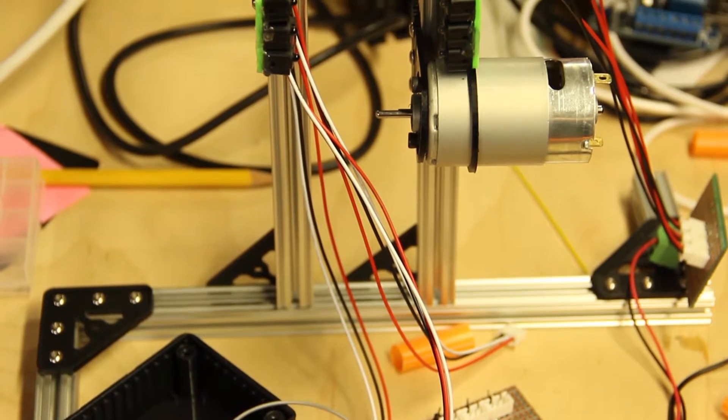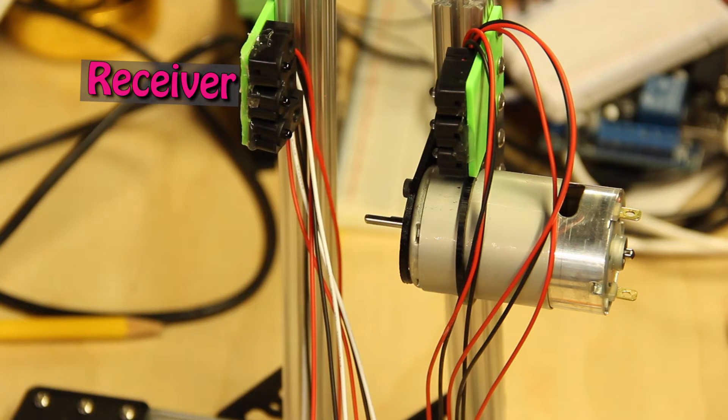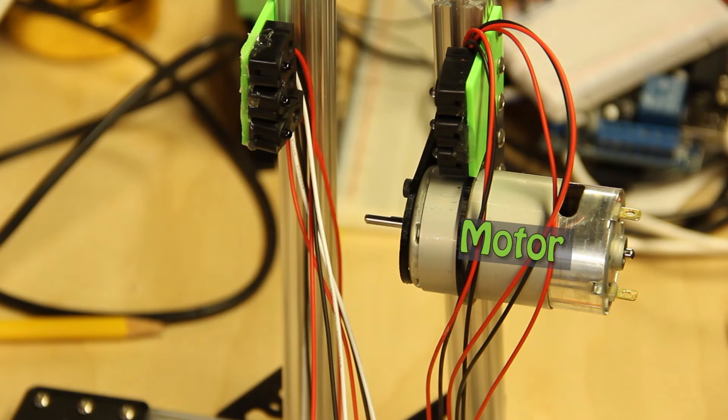We connectorized our sensors, but you can use breadboards and jumper wires instead. We wired the brake beam transmitter and receiver, and we also powered and controlled our motor that is spinning the encoder.